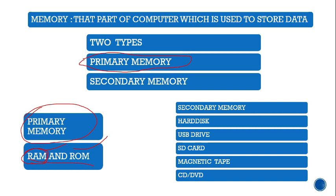ROM stands for Read-Only Memory. It is placed when the computer is built and stores some basic data. ROM is non-volatile in nature — it does not need electricity to store the data. The key difference: RAM is volatile while ROM is non-volatile. The size of ROM is generally 1 to 2 MB, used to store small system data like date and time.